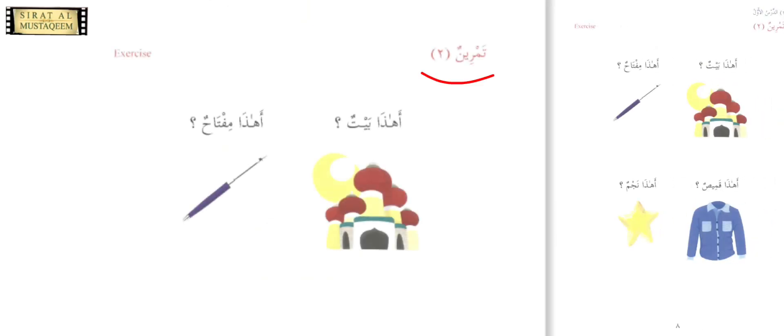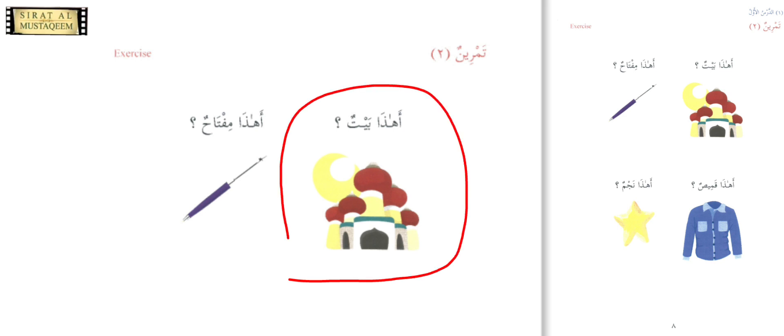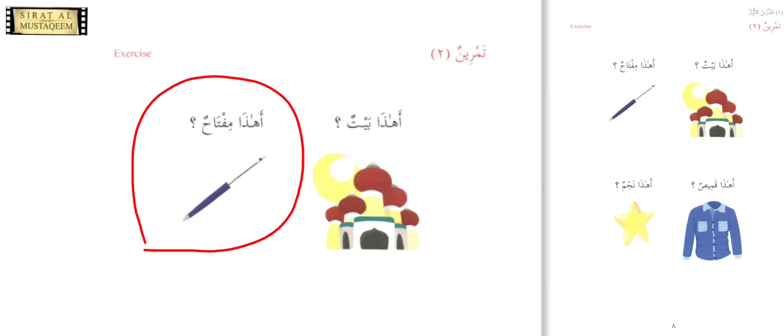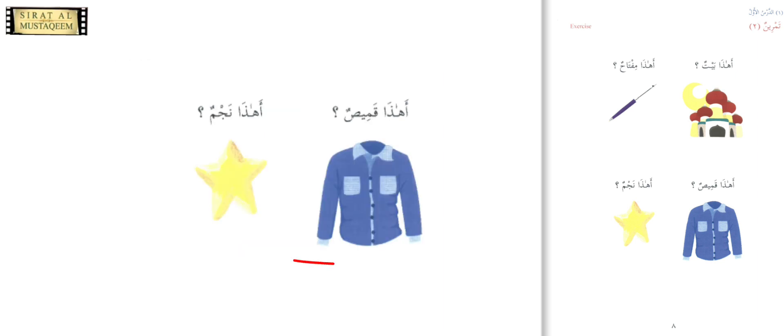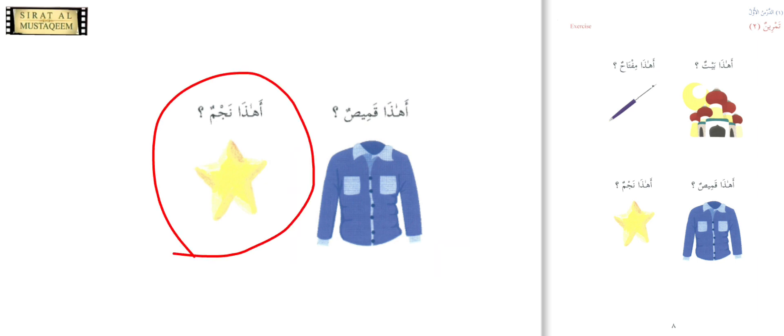Tamreen two — the second exercise. 'Ahaza baytun?' — is this a house? We say no: 'la, haza masjidun' — no, this is a masjid. Next: 'ahaza miftahun?' — is this a key? 'La, haza qalamun' — no, this is a pen. 'Ahaza qamisun?' — is this a shirt? 'Naam, haza qamisun' — yes, this is a shirt. 'Ahaza najmun?' — is this a star? 'Naam, haza najmun' — yes, this is a star.